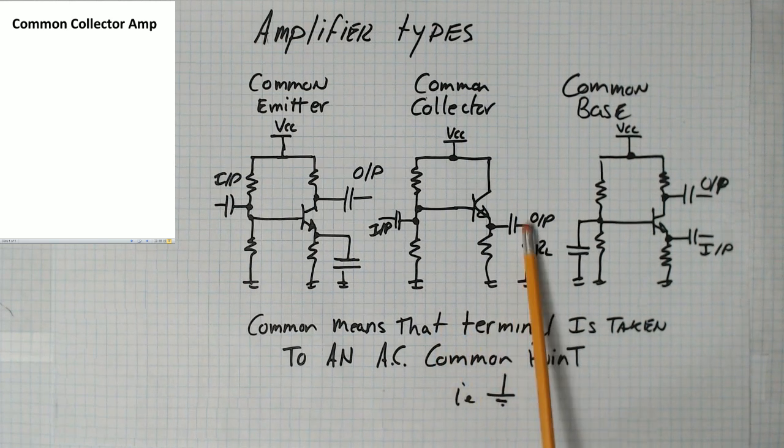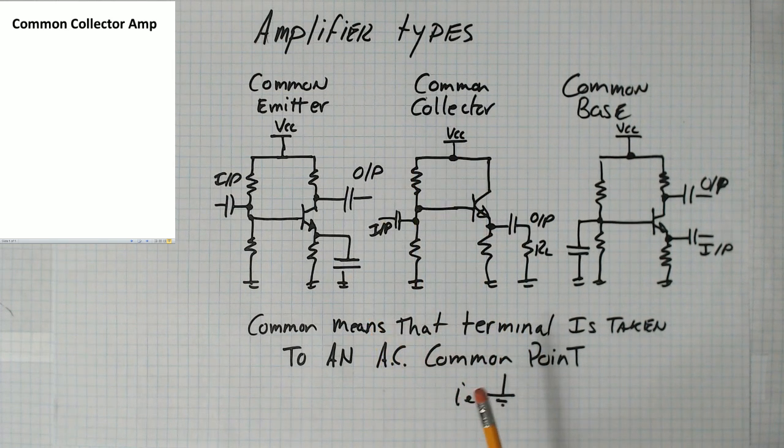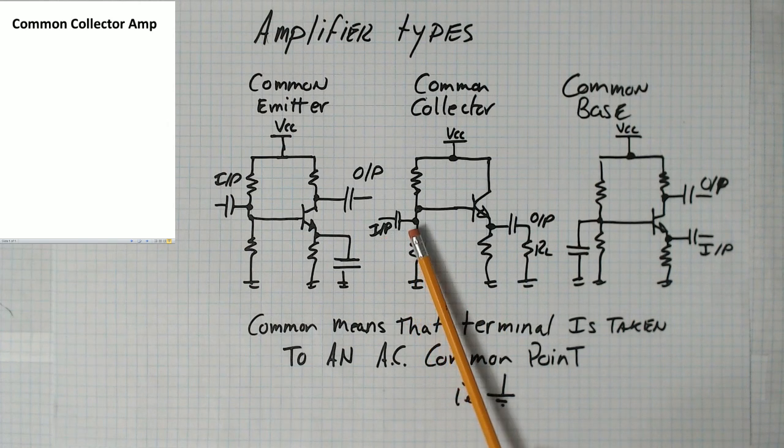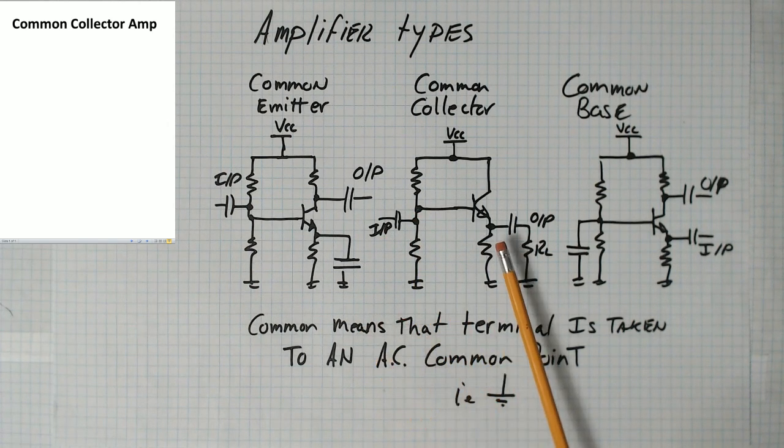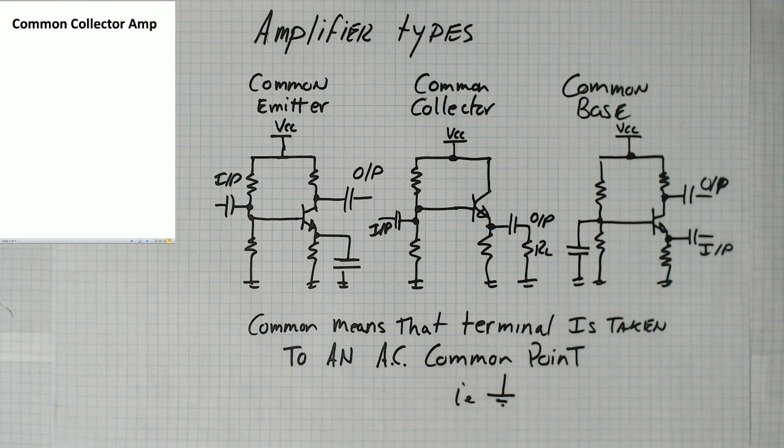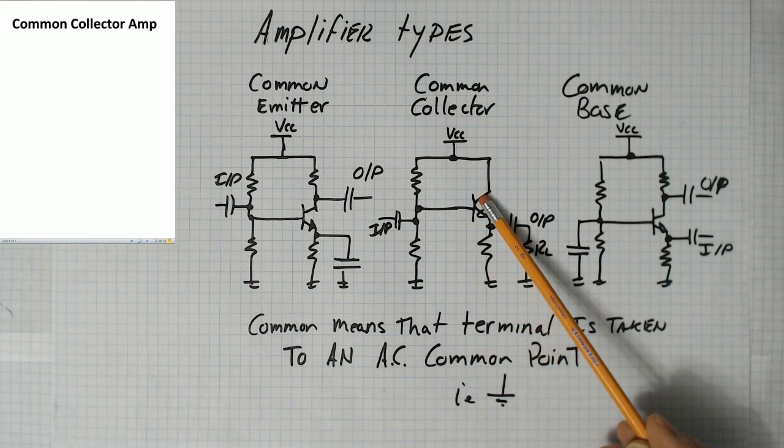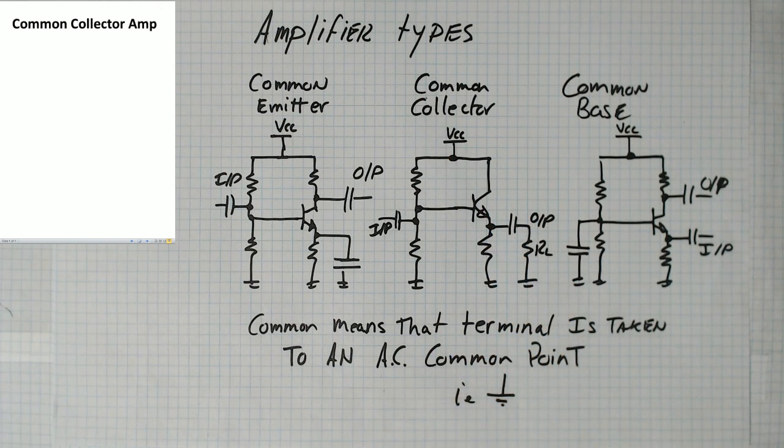Today we're going to start a circuit called common collector. In the common collector, the input is applied to the base again through a capacitor, and the output is taken off of the emitter. The collector is tied directly to the power supply, which is a DC source.